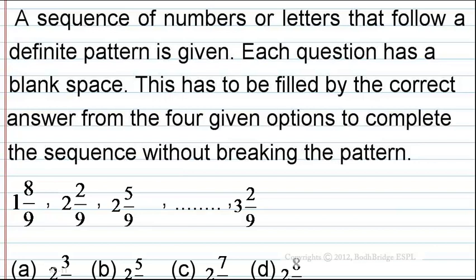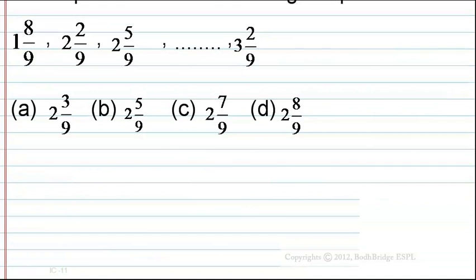The pattern is: 1 and 8/9, 2 and 2/9, 2 and 5/9 — and here the blank space is given in the middle — followed by 3 and 2/9.